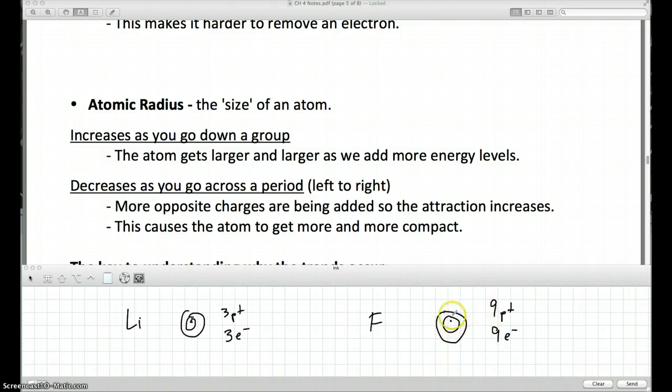And since we have more opposite charges, what happens is, since there's more opposite charges, it pulls those rings in closer. Since there's nine positive protons, what it does is, it pulls those rings in closer to the nucleus. So lithium, since it only has three positives here, pulling that cloud in, pulling on those rings, it doesn't pull those rings in as tight. So this, again, is kind of a bad drawing here. Fluorine, since it has more positives, is going to pull those rings in closer, making the atom more compact.